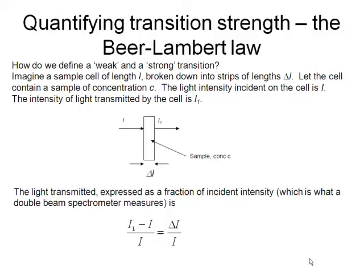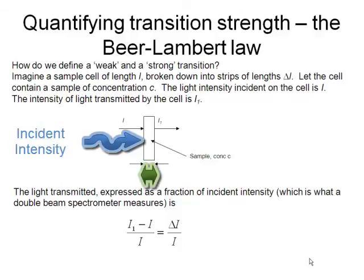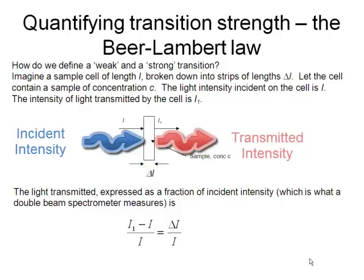There's our sample, which has got some light coming in from the left. It's hitting our sample and we've broken our sample up into lots of thin strips of length delta L. The light that's transmitted has intensity I, and the length of that cell is delta L.